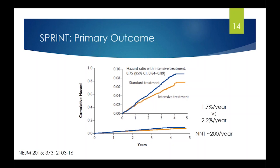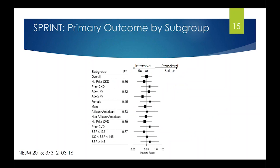SPRINT had important pre-specified subgroups. The population was enriched for patients with CKD — about 30% had CKD defined as an eGFR less than 60 — as well as older patients, women, African-Americans, and patients with a history of cardiovascular disease. Within all these subgroups, the intervention worked equally well, as shown by non-significant p-values for interaction, though confidence intervals were wider for smaller groups.